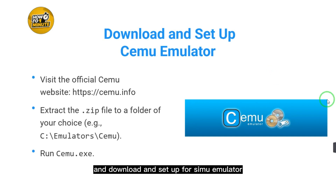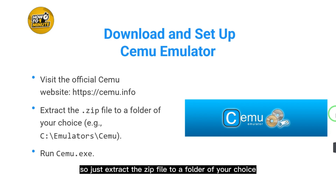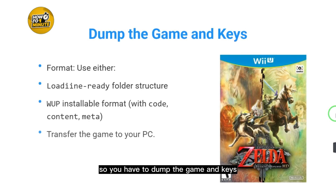To download and set up CEMU emulator, visit the official CEMU website. You'll see the website there — just extract the zip file to a folder of your choice and run cemu.exe.